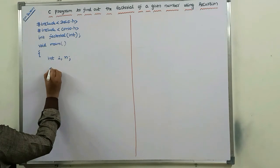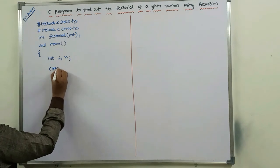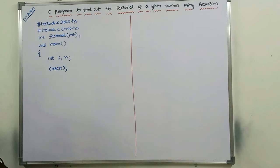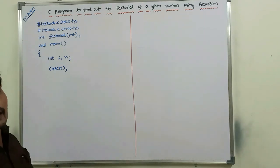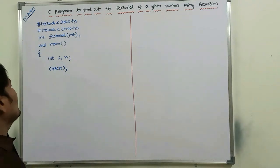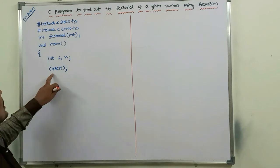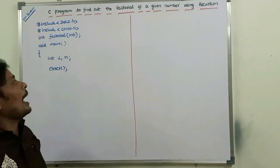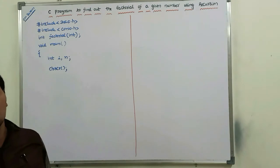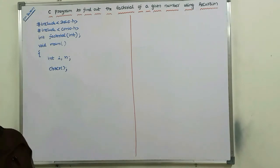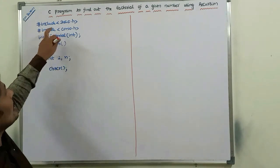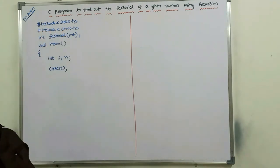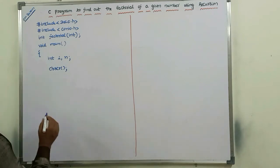Now, clrscr — this is the clear screen function. This function is used to clear the output screen. This function is included in the header file #include conio.h, so we must include this header file.